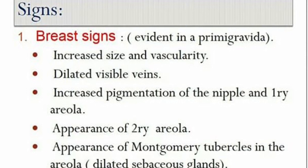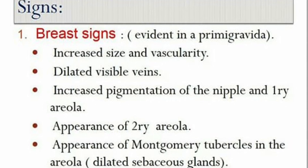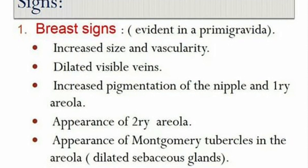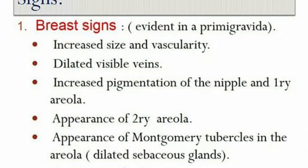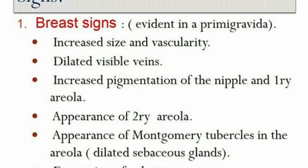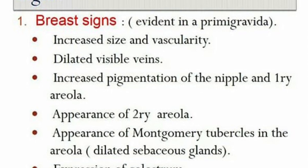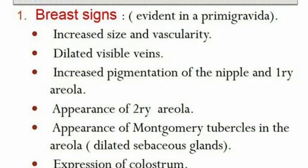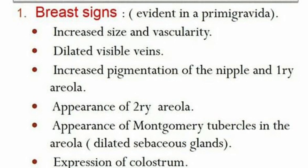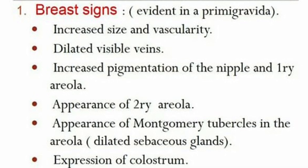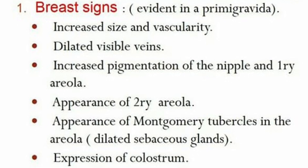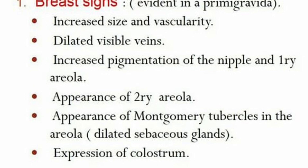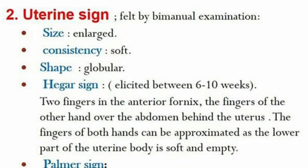Now let's talk about the signs when diagnosing pregnancy. First, breast signs are evident in primigravida, whereby there is an increase in size and vascularity. On examination, you can see dilated veins, increased pigmentation of the nipple and the primary areola, and the appearance of the secondary areola, which usually occurs in the second trimester. Another important breast sign is the appearance of Montgomery tubercles in the areola, and expression of colostrum at about 12 weeks.